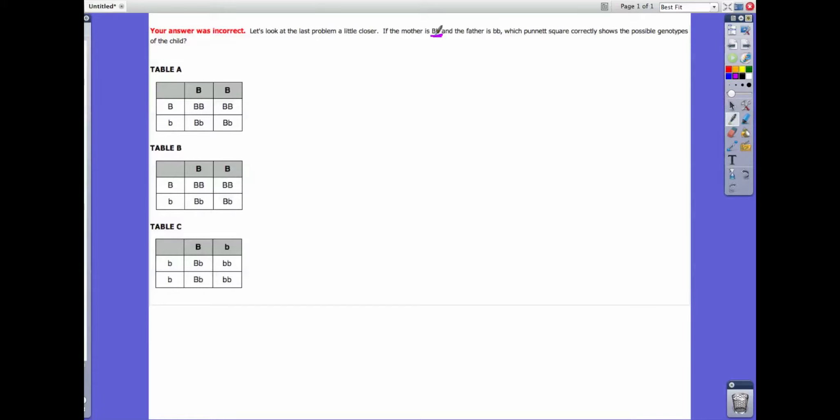All you have to do is look at the mother. In this case, the mother is capital B and lowercase b. Those are her alleles that she's passing on to her child. If you look at the father, the father is little b and little b.